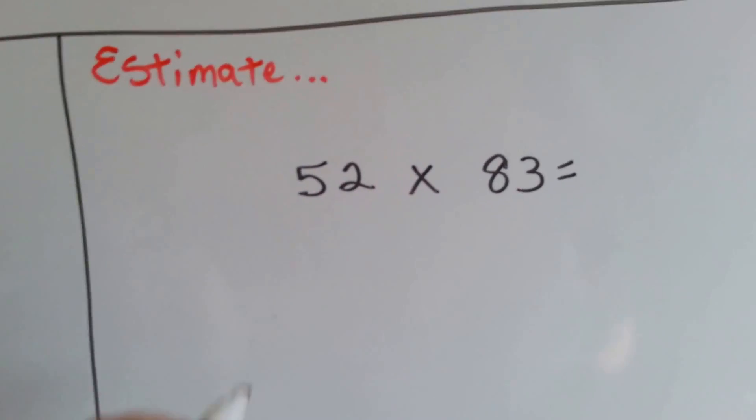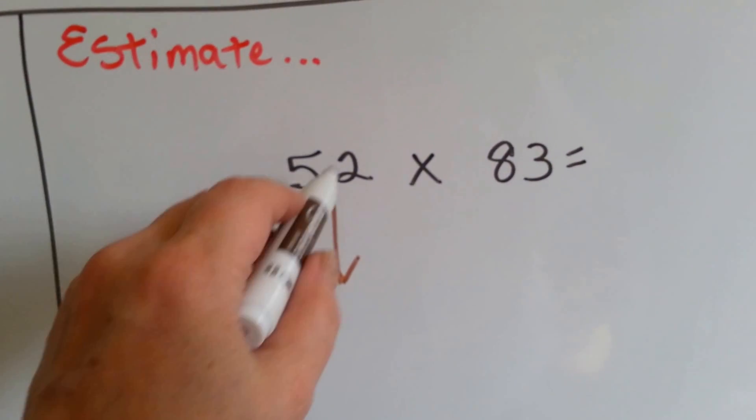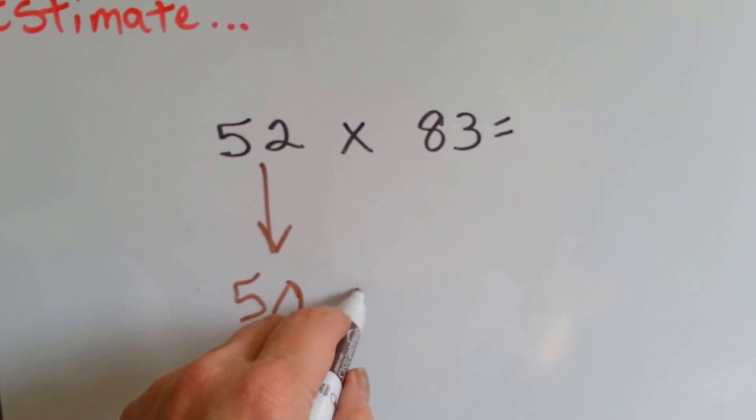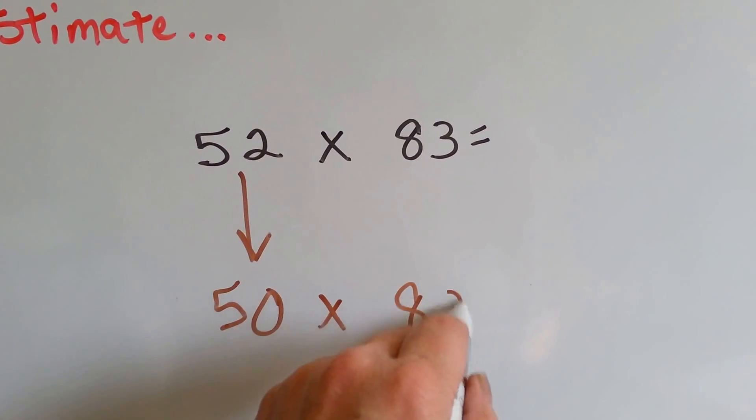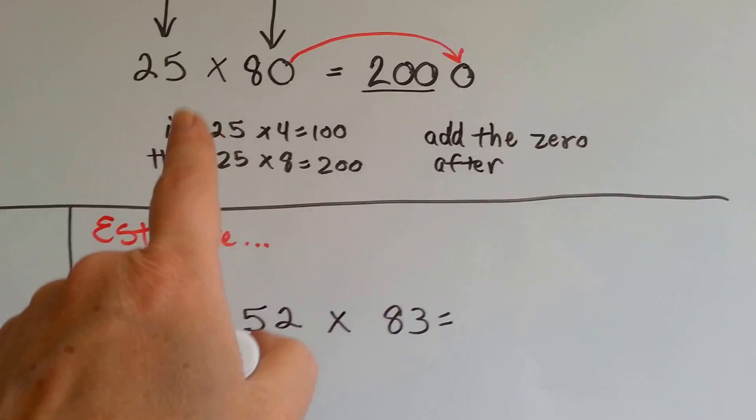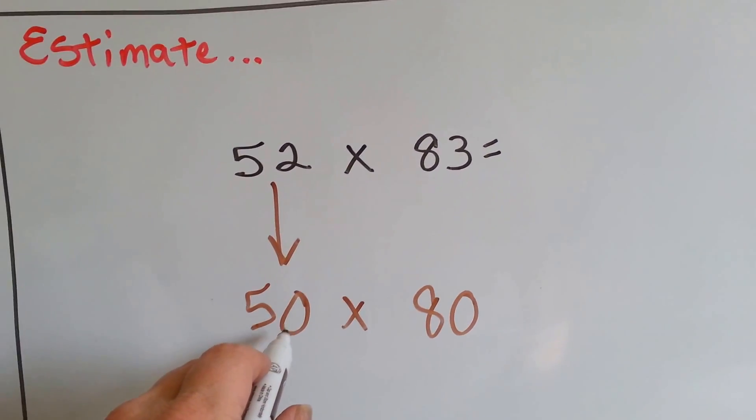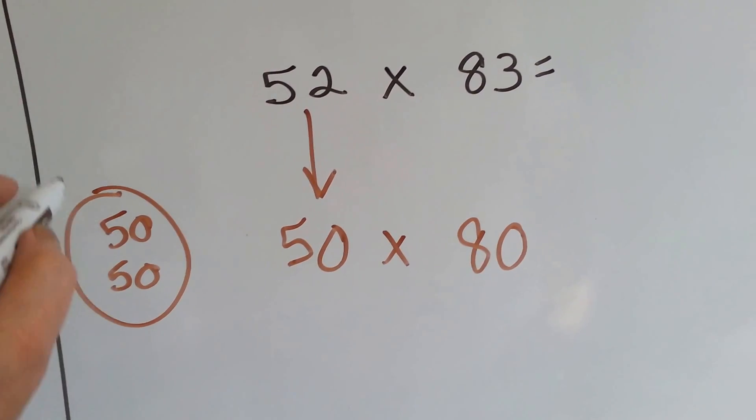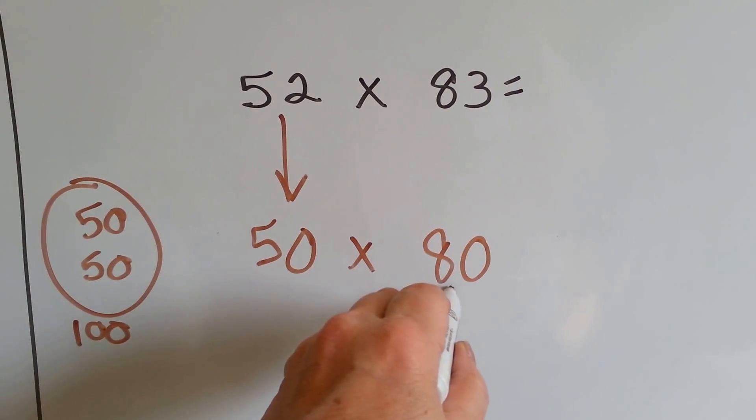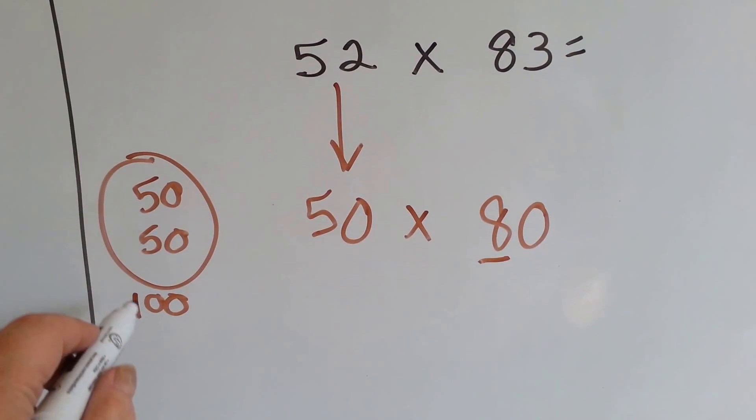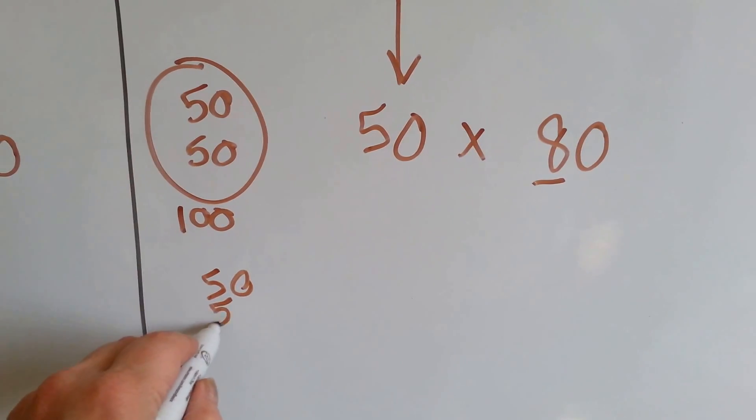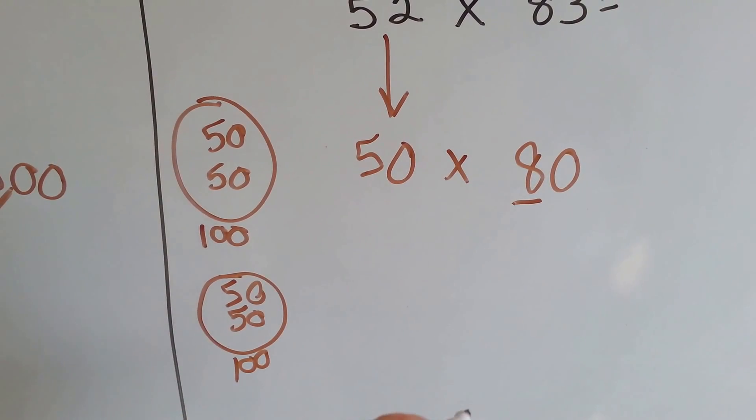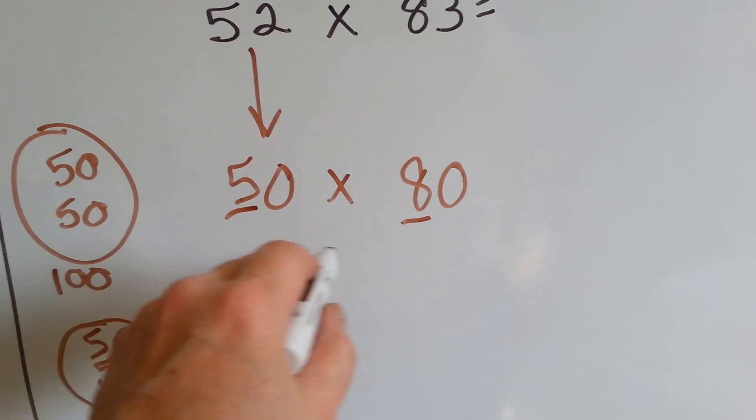How about this one? Fifty-two rounds, the two tells the five to stay the same, and when it's finished it becomes a zero. And eighty-three, is it closer to eighty or ninety? The three tells the eight to stay the same, and it turns into a zero, so it's closer to eighty. This one is just like this one. How many fifties are in a hundred? If that's one hundred, how many would eight be? If two of them is one hundred, how many would eight be? Well, four of them would be two hundred. Four times two is eight.